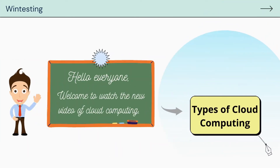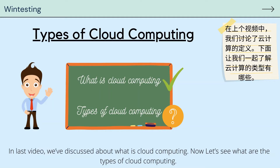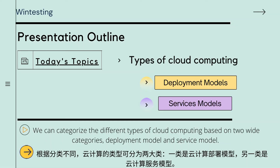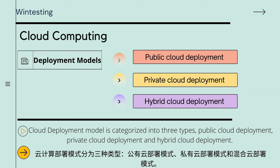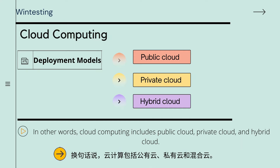Welcome to this video on types of cloud computing. In the last video we discussed what is cloud computing. Now let's see what are the types. We can categorize the different types of cloud computing based on two wide categories: deployment model and service model. In this video we will talk about the deployment model, which is categorized into three types: public cloud, private cloud, and hybrid cloud.